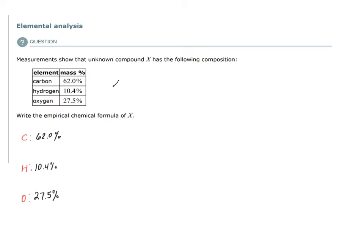So our first step, we go from percent mass to grams by assuming that we have 100 grams of sample. By assuming I have 100 grams of sample, since a percent is out of 100, if I have 100 grams of sample and 62% of it is carbon by mass, then I'd have 62 grams of carbon.